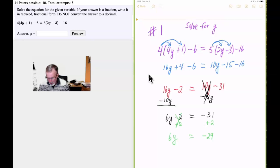So what we're going to do next is just divide both sides by 6. So 6y divided by 6 is y, 1y or just y. And that's equal to negative 29 sixths. And 29 and 6 are co-prime. They don't have any common factors. And so we can't reduce that. And this is going to be our final answer.